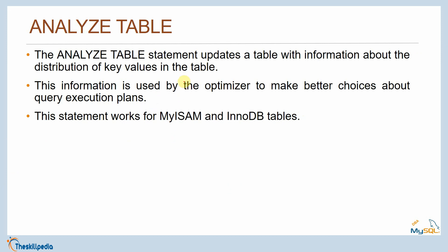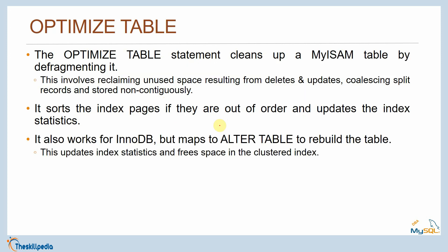ANALYZE TABLE updates a table with information about the distribution of key values. This information is used by the optimizer to make better choices about query execution plans. This statement works for both MyISAM and InnoDB. OPTIMIZE TABLE cleans up MyISAM tables by defragmenting them — reclaiming unused space resulting from deletes and updates, coalescing split records stored non-continuously, sorting indexes that are out of order, and updating index statistics.